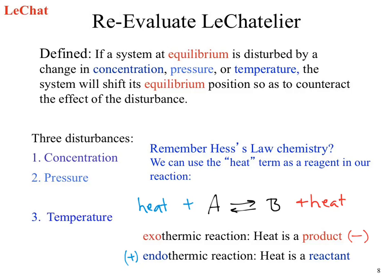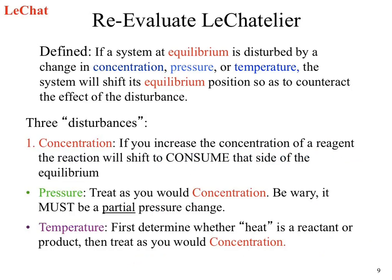This is kind of a summary of everything. If we look at our concentrations — increase the concentration of reactant — our reaction is going to shift to consume that increase, so to do that we have to make products. If we do pressure, it's the same idea as our concentration. When we look at temperature, we first decide where that heat term should show up — either as a product or as a reactant — and once we know that, we can treat it the exact same as we would with concentrations or pressures.